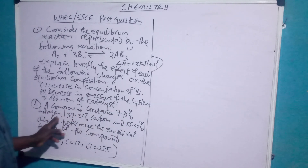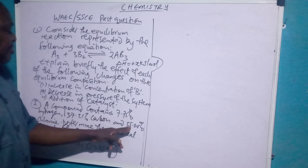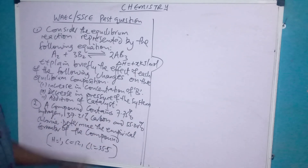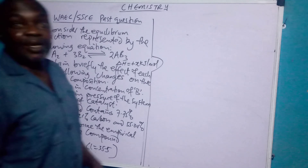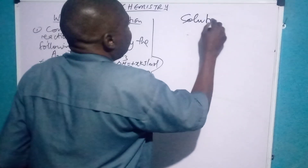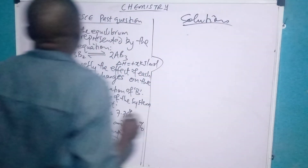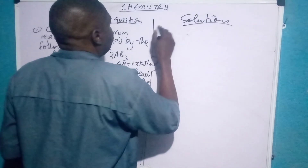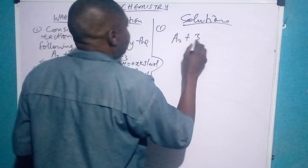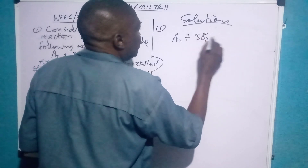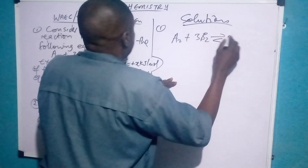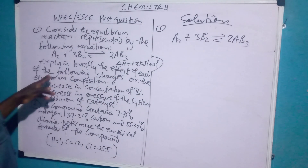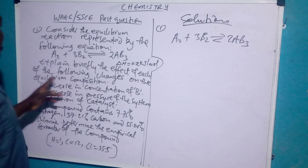Then question two: a compound contains 7.75% hydrogen, 37.21% carbon, and 55.04% chlorine — determine the empirical formula of the compound. Let's tackle them one after the other. The equation for question one is: A2 plus 3B2 gives 2AB.